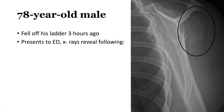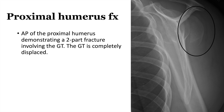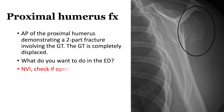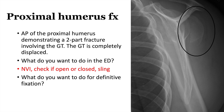Let's get started. You've got a 78-year-old male who fell off his ladder three hours ago and comes to the ED. The read would be: this is an AP of the proximal humerus demonstrating a two-part fracture involving the greater tuberosity, which is completely displaced. What do you want to do in the ED? Check neurovascular status, whether the fracture is open or closed, and put on a sling. Definitively, you'd fix this with a plate and screw construct — you can't have greater than five millimeters of displacement.